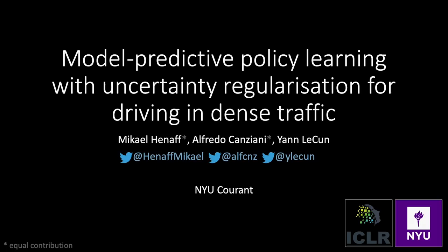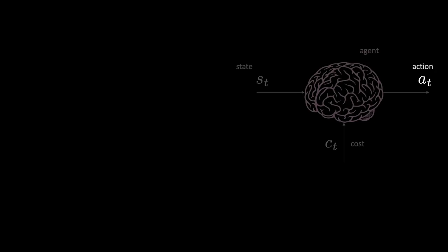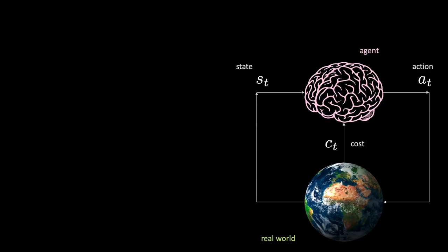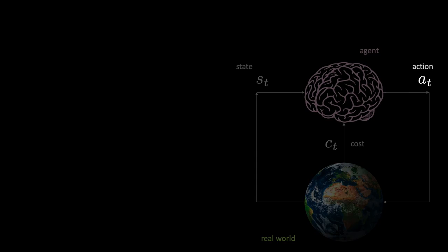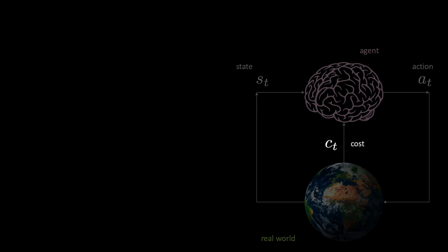Let's start by seeing what the policy does. Here we can see an agent, represented by a pink drawing of a brain, which is performing an action given that it finds itself in a state. After performing a specific action, it observes a consequence or cost. An agent interacts with an environment, here represented by a picture of the world. The real world tells us what the next state will be, given a specific initial state and action AT. Moreover, it provides information about the cost associated with a specific action.